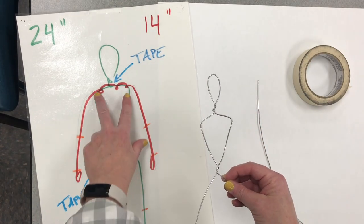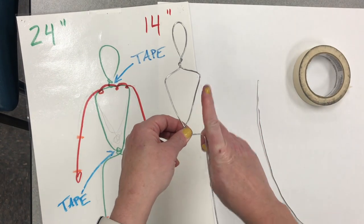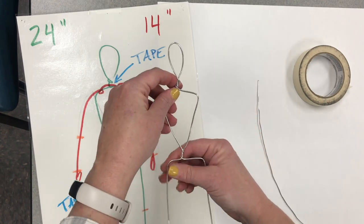And for the hips, go out and down just like the shoulders. Make sure they're about the same width as the shoulders.